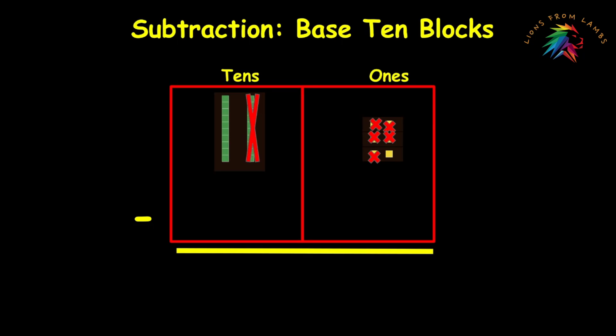Now that we've done that, we'll count what we have left. We have one unit in the ones place, which gives us a value of 1. And we have one 10 rod in the tens place, which gives us a value of 10, but a digit in the answer of 1. So 26 minus 15 equals 11.